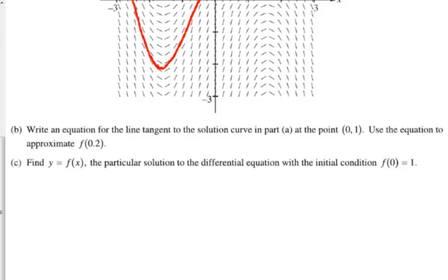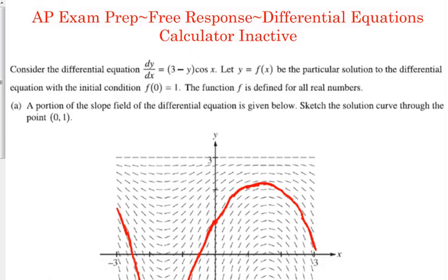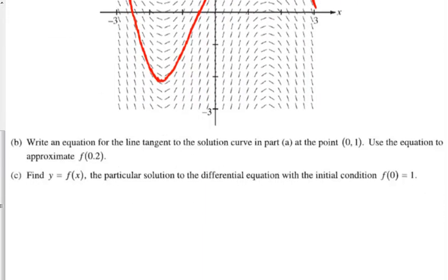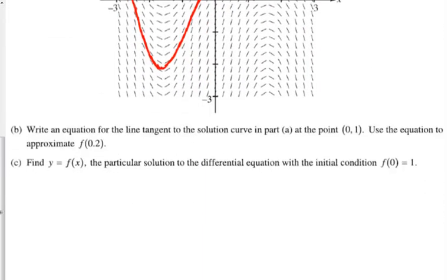The next part says, write an equation for the line tangent to the solution curve in part A at the point (0, 1), and use the equation to approximate point 2, for point 2. So, tangent line to the curve, what do we have to have? The derivative. Well, guess what? We were given the derivative. We were given the derivative. We need, but what do we do with the derivative? We plug in the point, and that gives us the slope.